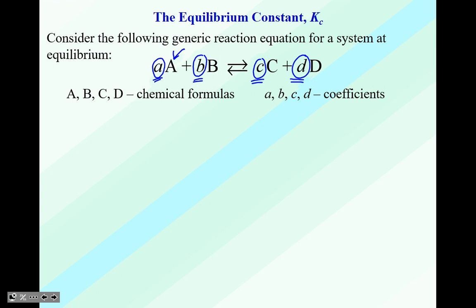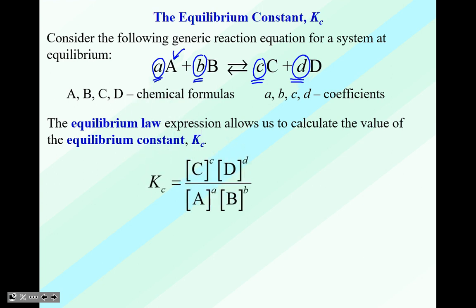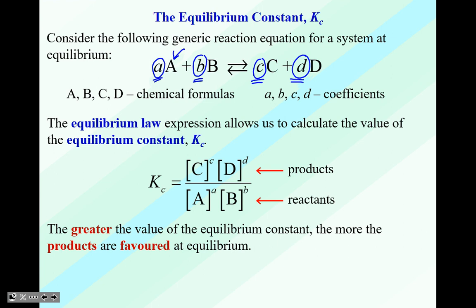The uppercase A, B, C, D are the chemical formulas, and the lowercase a, b, c, d are the coefficients. The equilibrium law expression allows us to calculate the value of the equilibrium constant using a very simple formula: the equilibrium constant is equal to your products over your reactants. The greater the value of the equilibrium constant, the more products are favored at equilibrium.